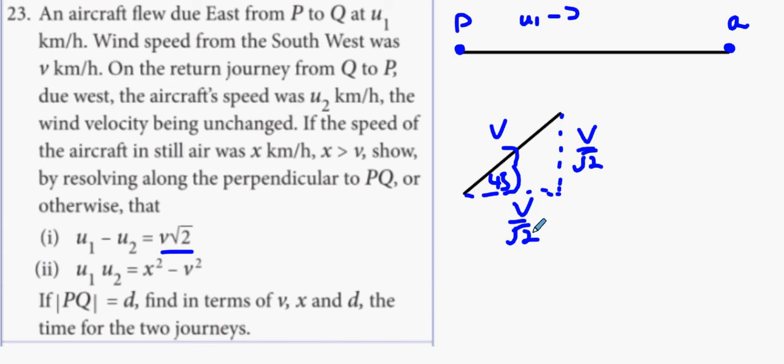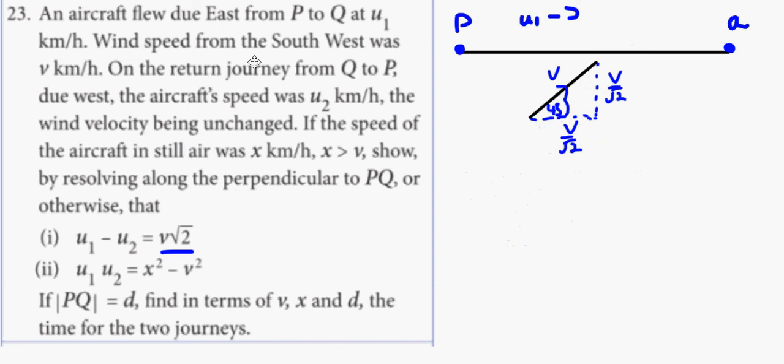Now, on the return journey from Q to P, so scenario 2, I'll just box this up here. And I'll just leave that there. Now, scenario 2 is a different thing altogether. You're on your way back. And this time, you're on your way back and watch your speed.